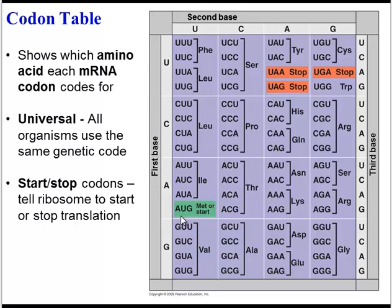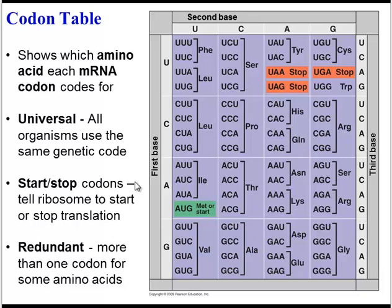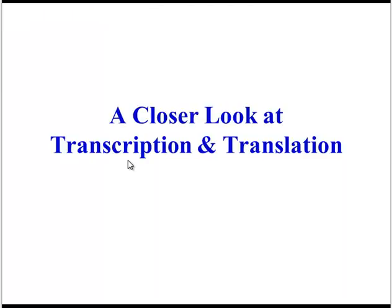Another important thing to note is that a few of these codons are start or stop codons, which tell the ribosome to either start or stop translation. And finally, the genetic code is redundant. You can see that two different codons can code for the same amino acid, and in some cases all four codons code for the same amino acid. Because of that, the code is said to be redundant.